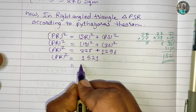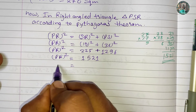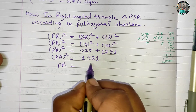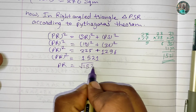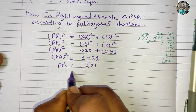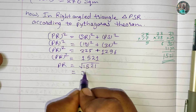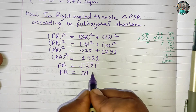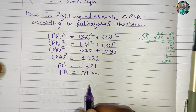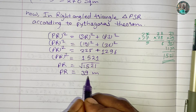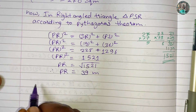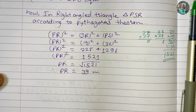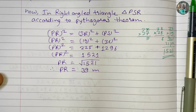The square root of 1521 is 39. So PR is equal to 39 meters.